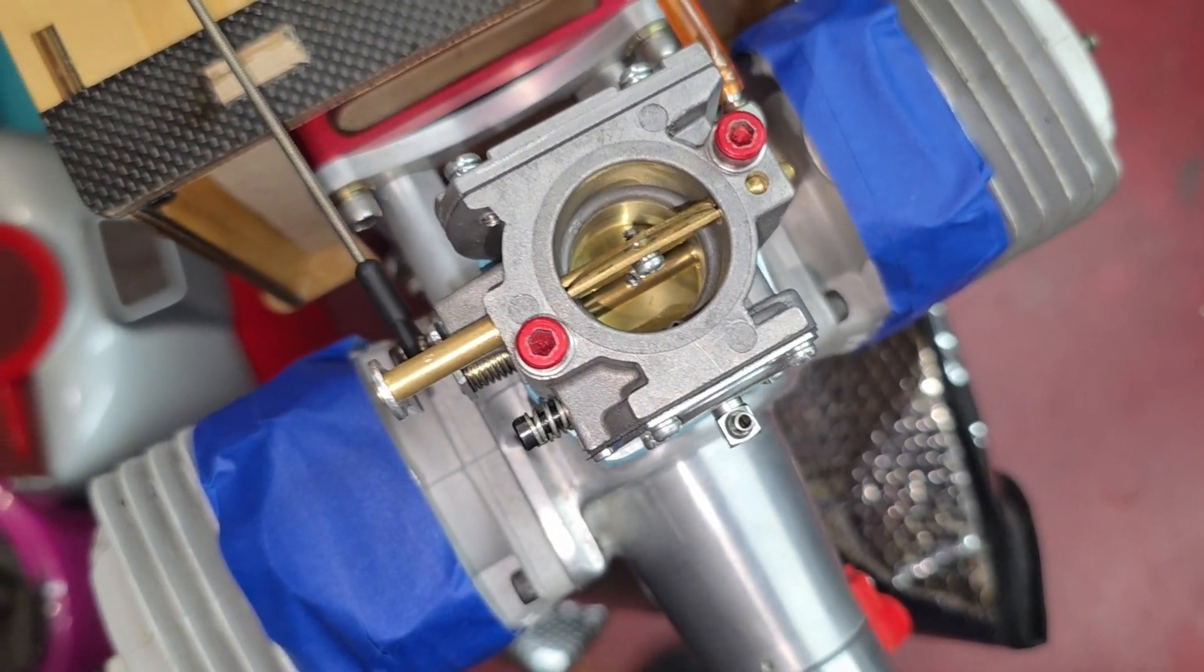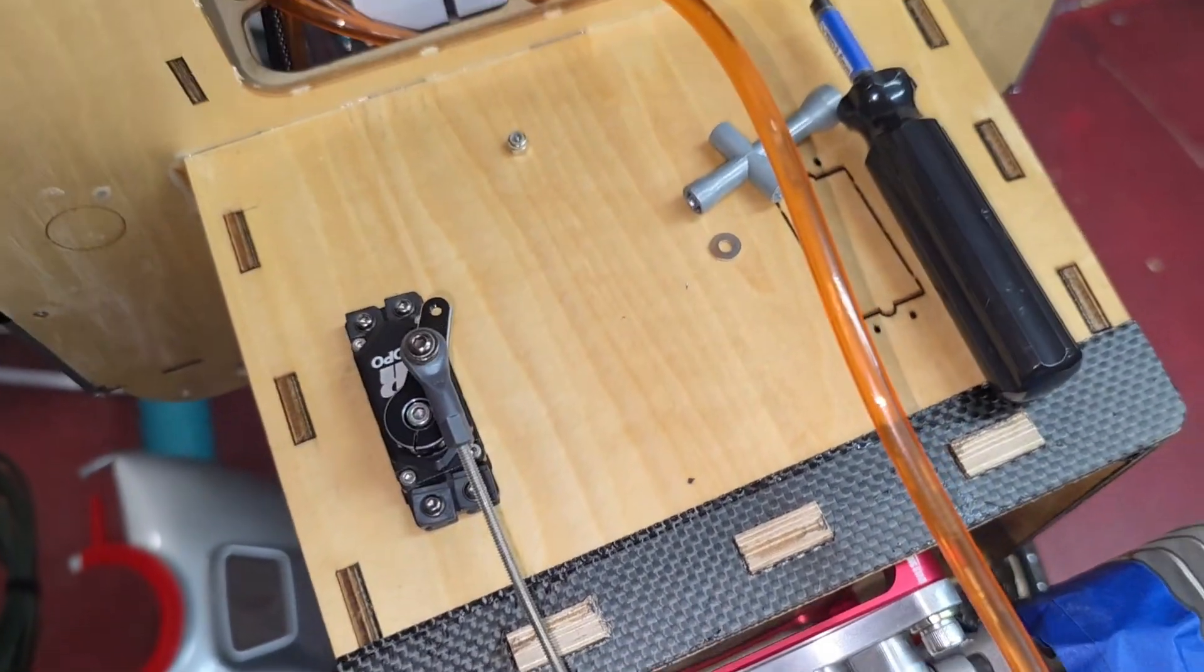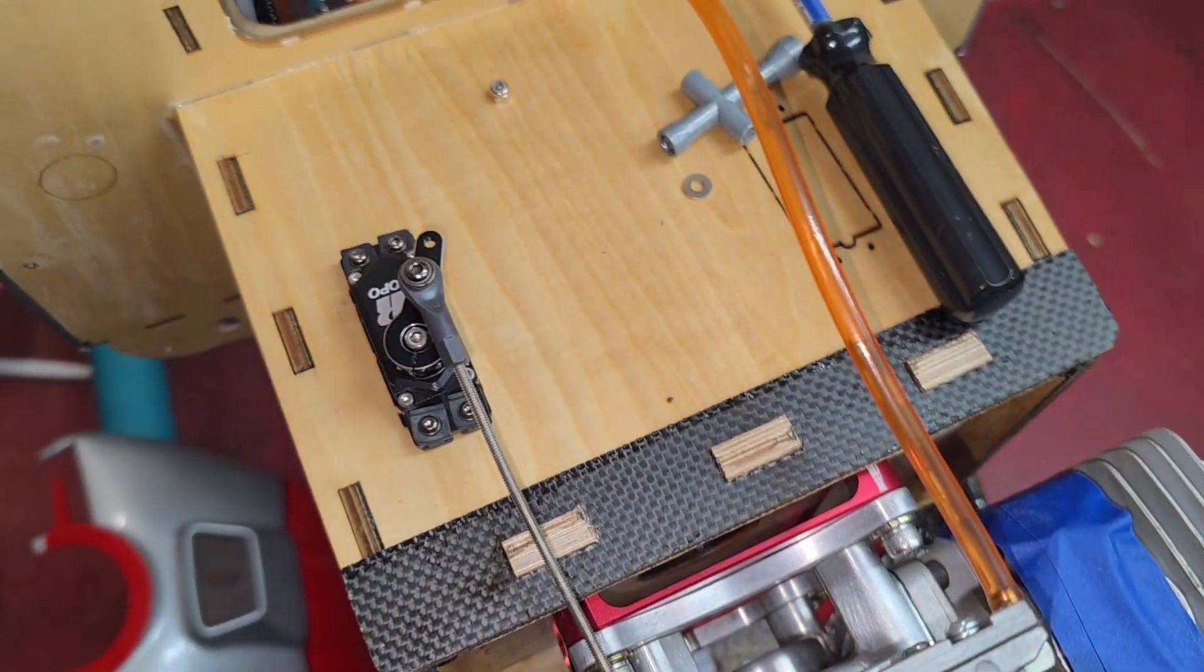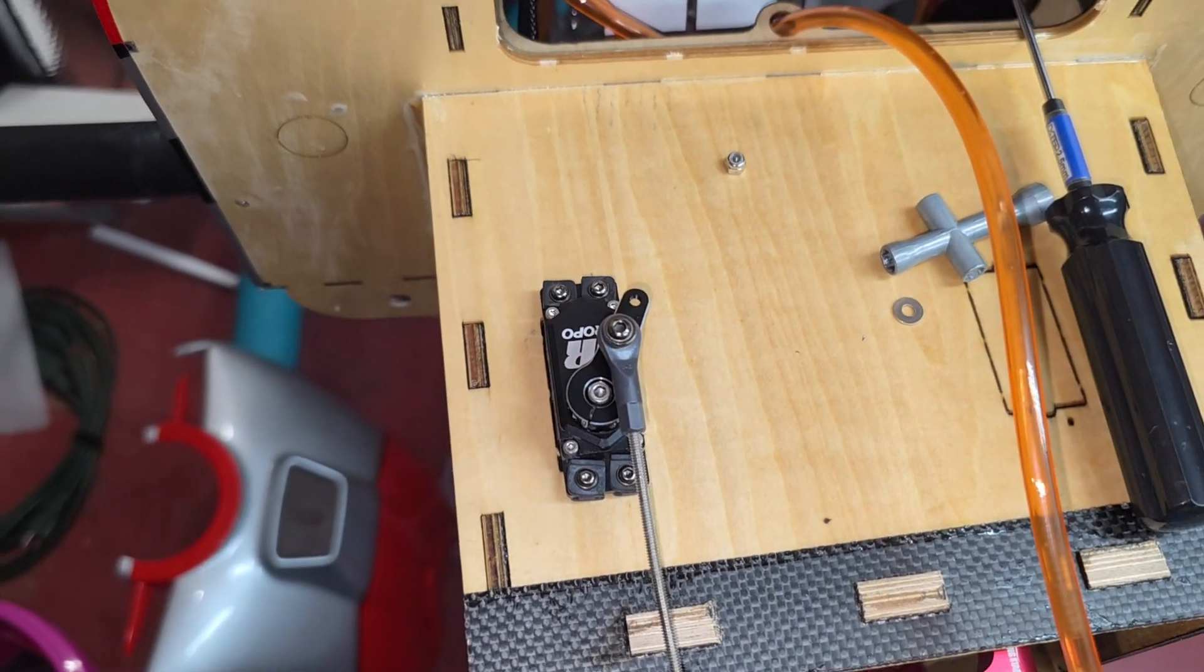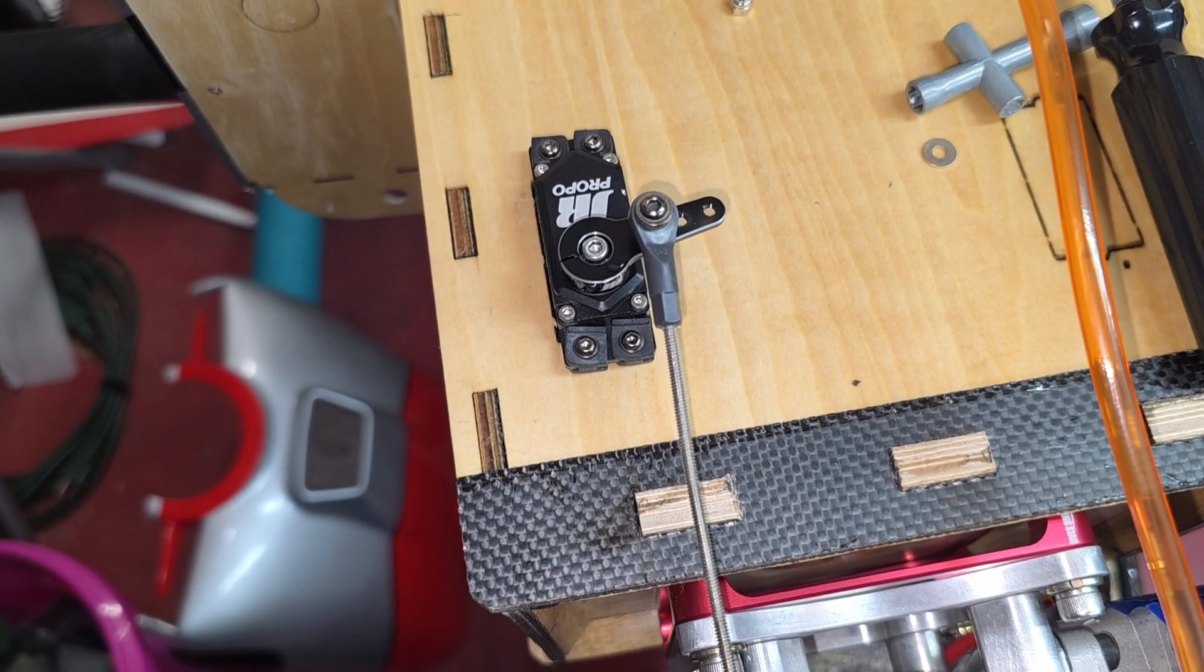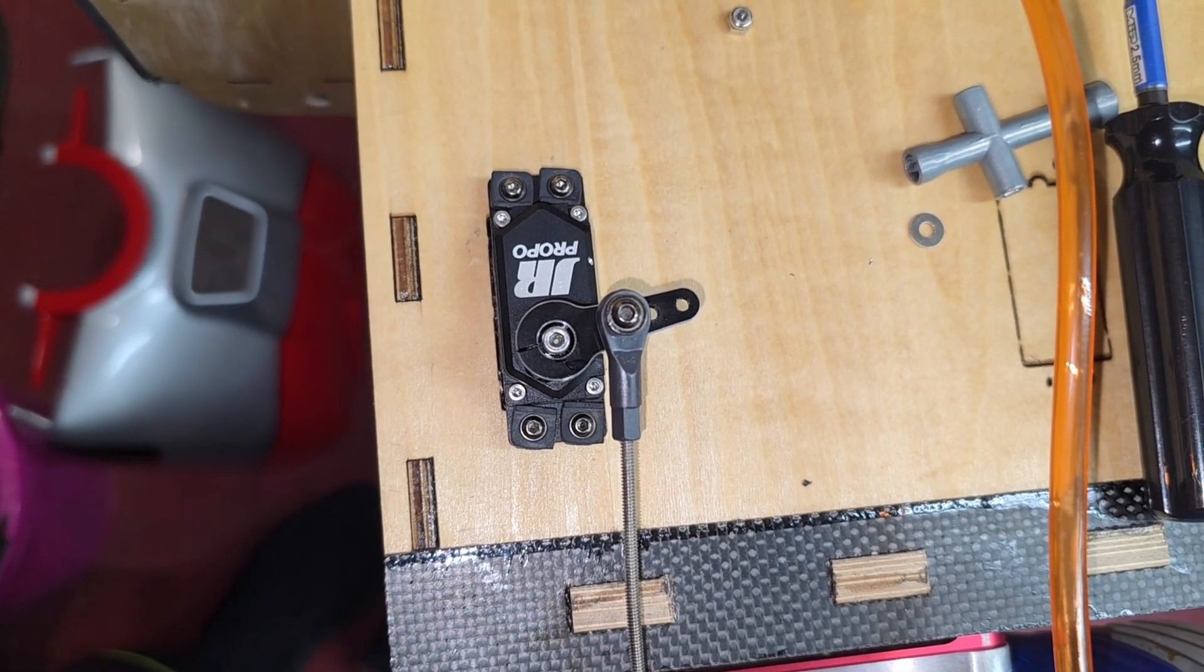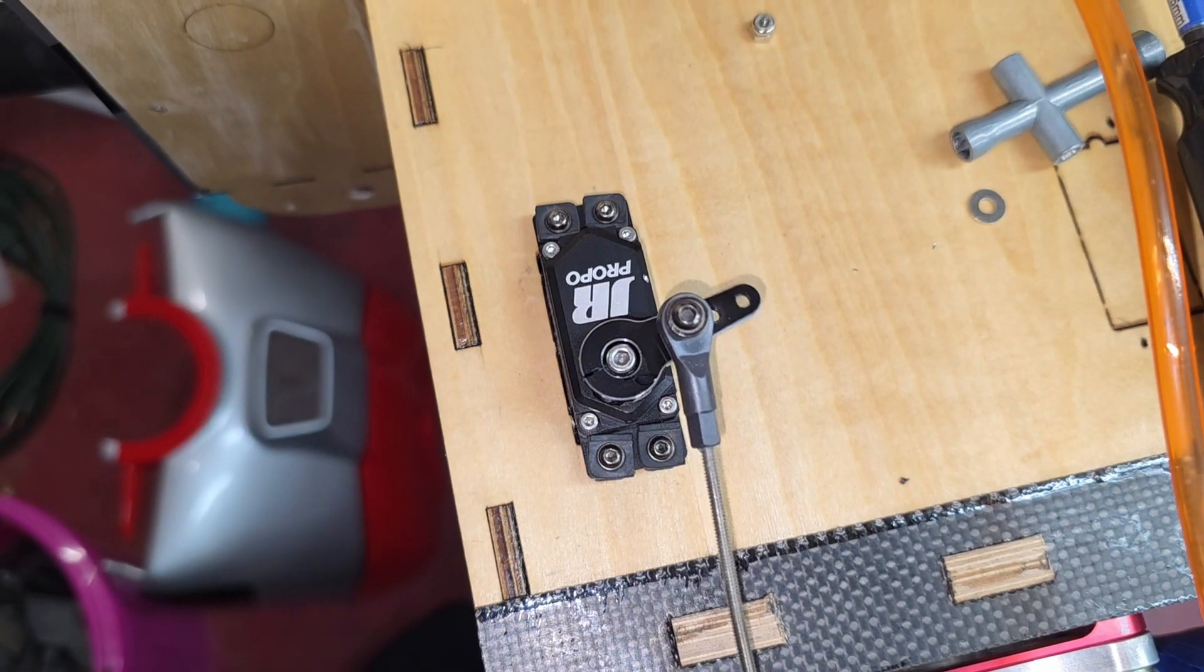So what we've done here by repositioning the arm—in this instance the carburetor arm moves forward when you open the throttle—is we've repositioned the arm so that there's more of a mechanical curve built into its movement. So this is about half stick. You can see that the servo arm is not perpendicular with the case, and by doing this...